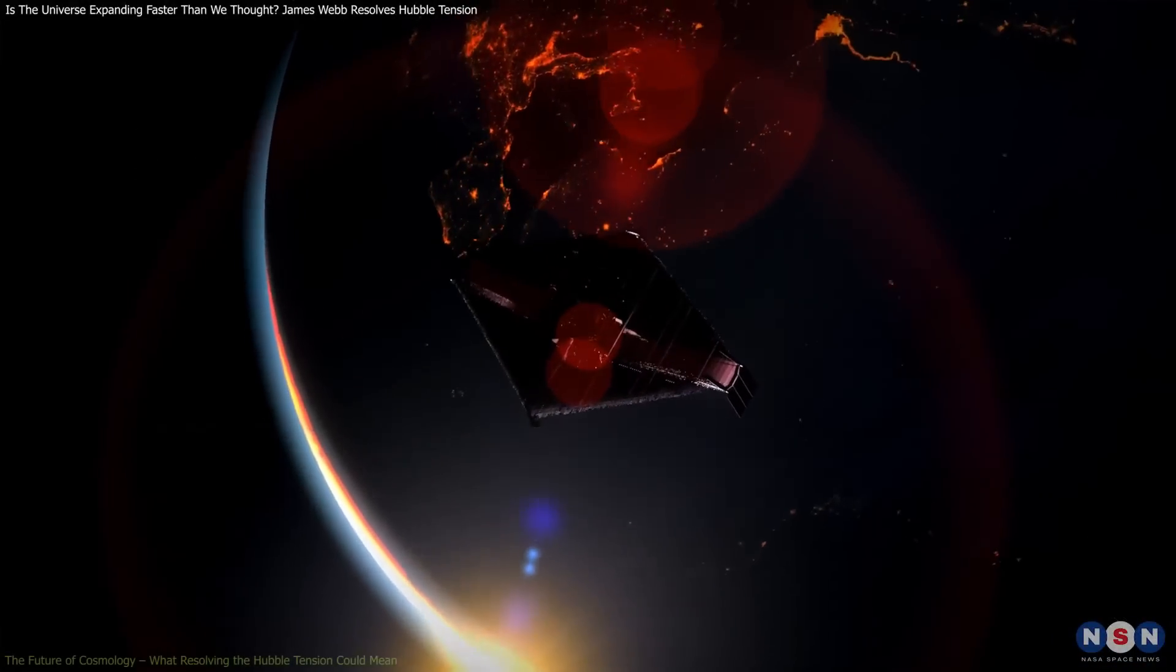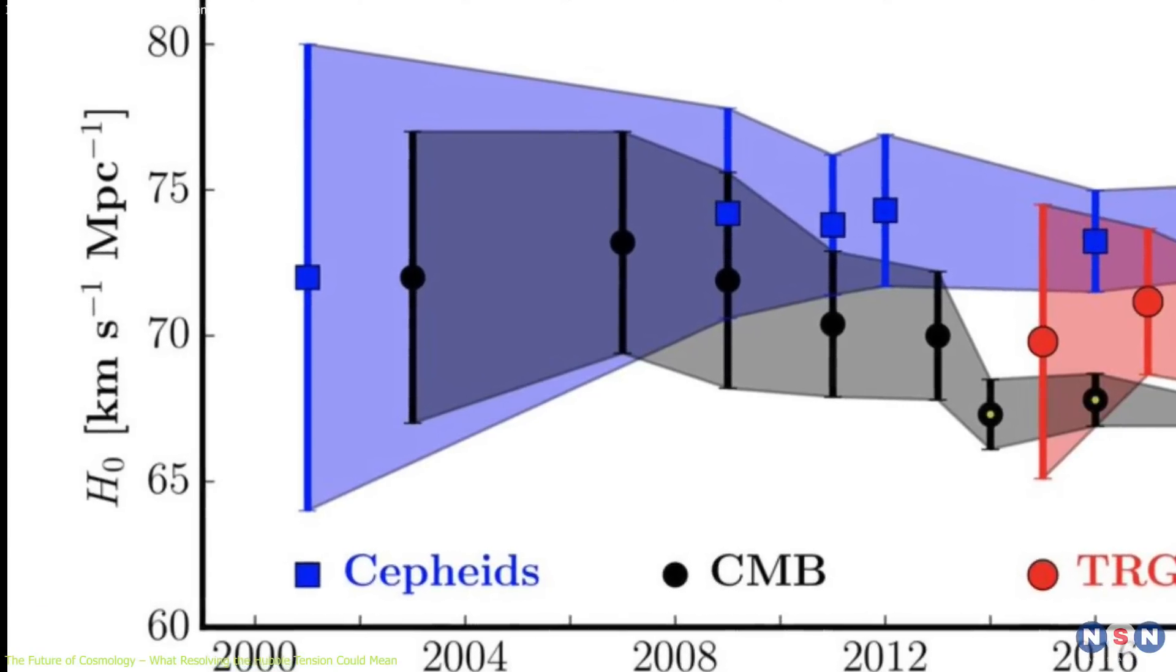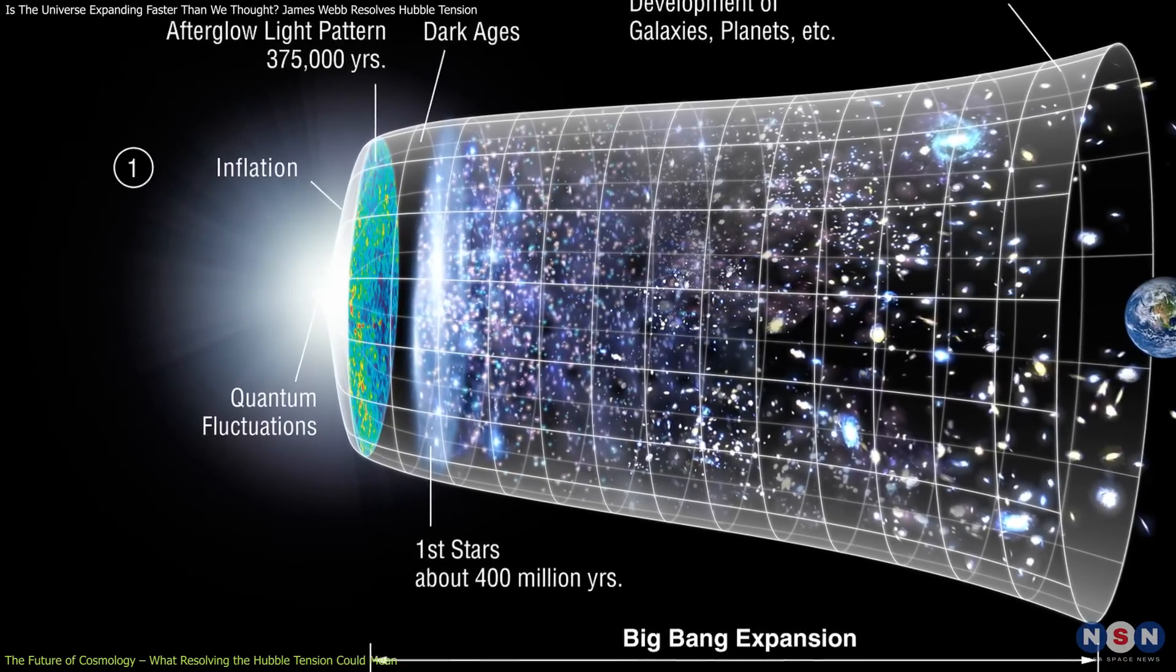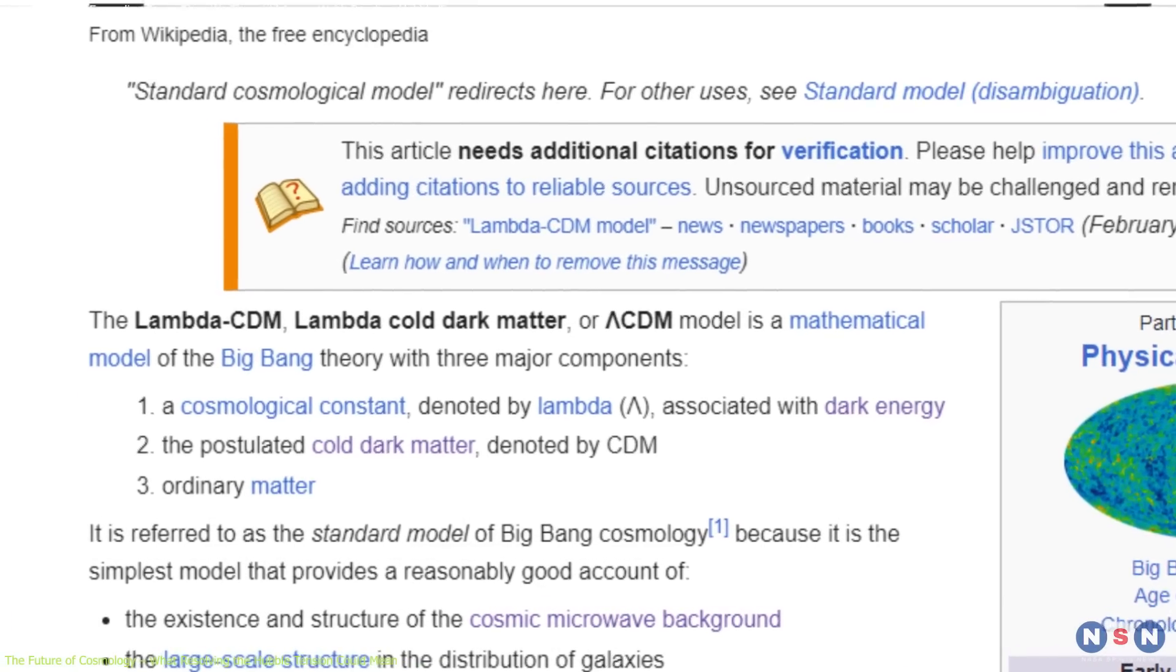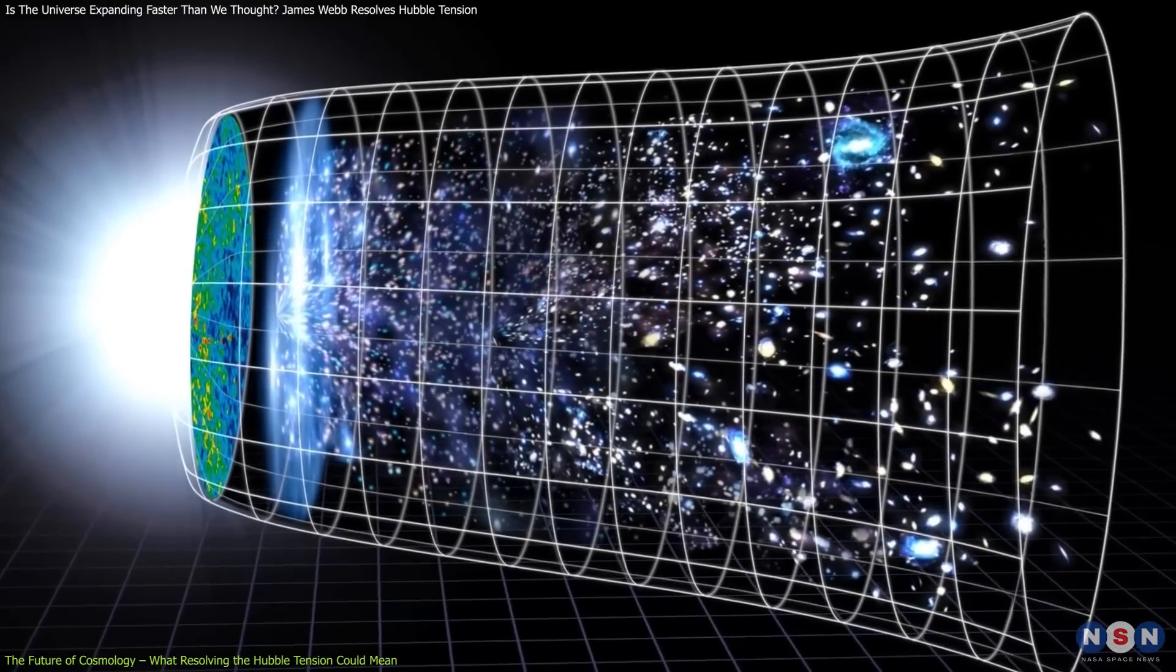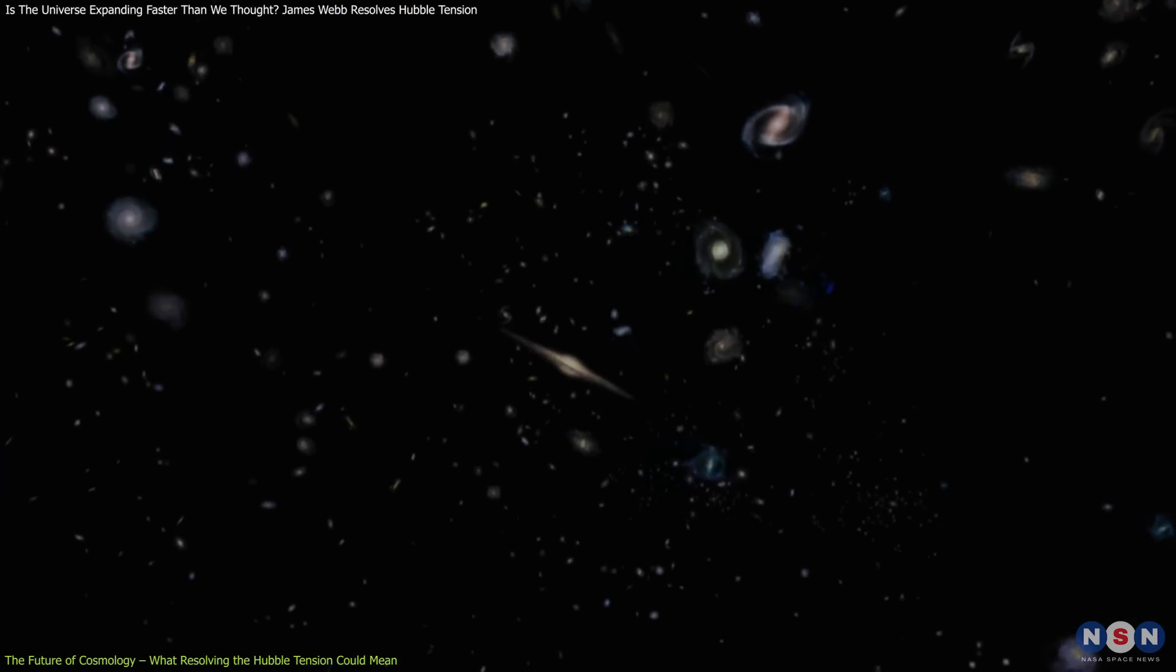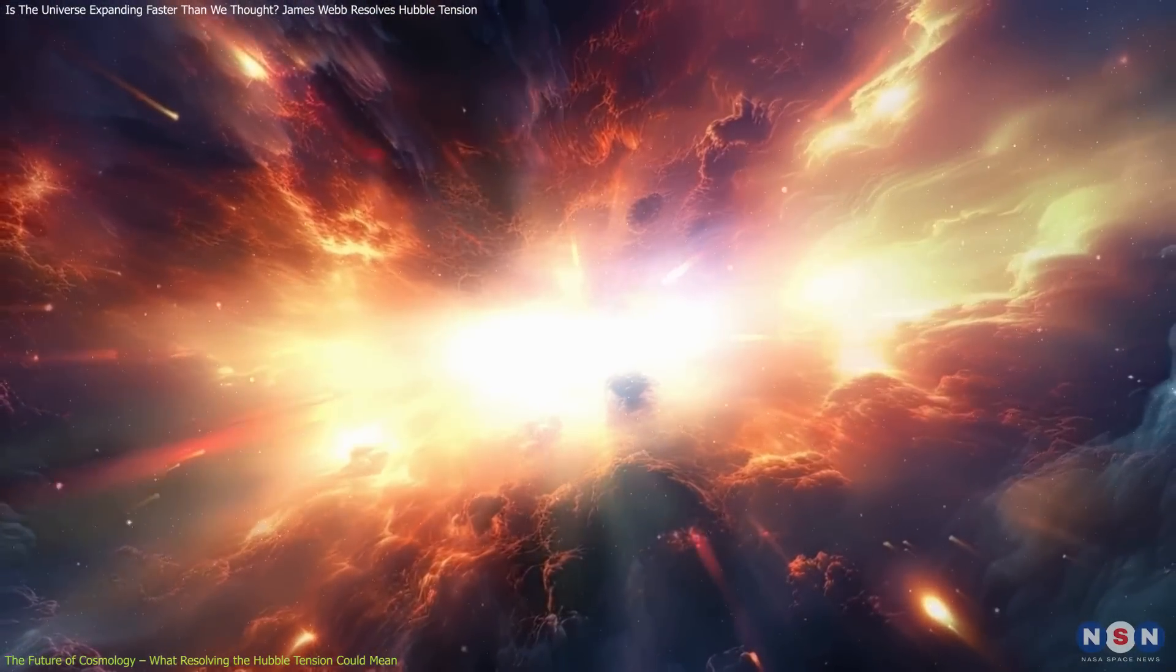If Webb's findings continue to confirm the lower value of the Hubble constant, around 67.4 km per second per megaparsec, it would suggest that our current cosmological model, the Lambda-CDM model, remains robust. This model, which includes dark energy, dark matter, and the cosmological constant, has been incredibly successful in explaining a wide range of astronomical observations. A consistent Hubble constant would reinforce the idea that the universe's expansion has been relatively smooth and predictable since the Big Bang, with no need for drastic revisions to our understanding of cosmic history.